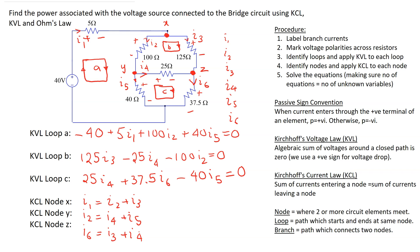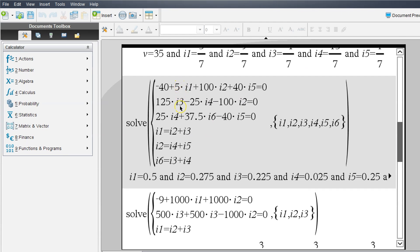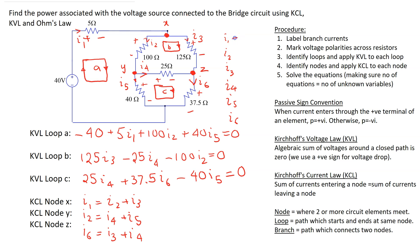Thus we obtain six linear equations which can be solved to obtain the values. Using a scientific calculator, we can program these six linear equations and solve. The obtained current values are: I1 is 0.5 amp, I2 is 0.275 amp, I3 is 0.225 amp, I4 is 0.025 amp, I5 is 0.25 amp, and I6 is 0.25 amp.